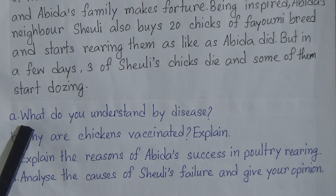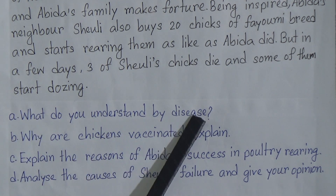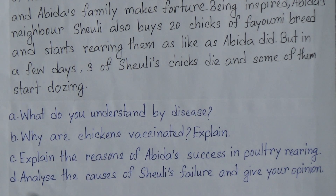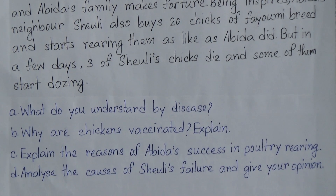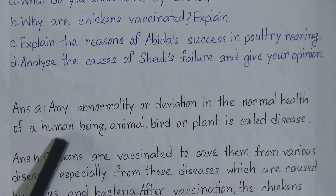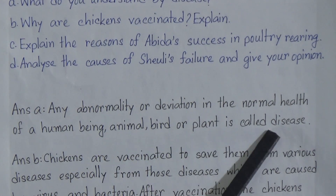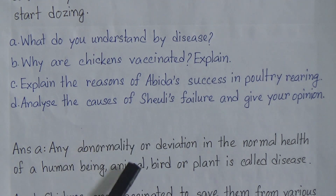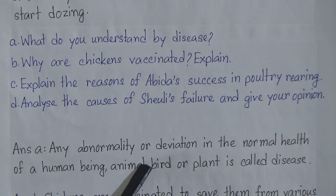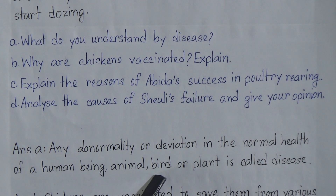Question number A is: what do you understand by disease? You can take the help of your book. The answer is: any abnormality or deviation from the normal health of a human being, animal, bird, or plant is called disease. This is the definition of disease. For this question, you will get one mark and you should try to give the answer within one sentence.